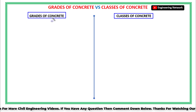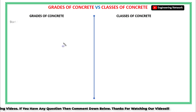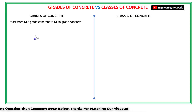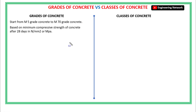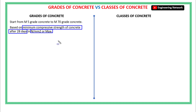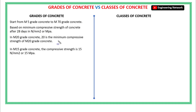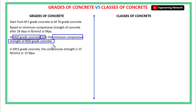Speaking of grades of concrete, the concrete is divided or classified into a number of different grades which start from M5 grade concrete to M70 grade concrete. These grades of concrete are created based on the minimum compressive strength of concrete after 28 days of construction. For example, in M20 grade concrete, the numerical value 20 is basically the minimum compressive strength in Newton per millimeter square or mega Pascal.